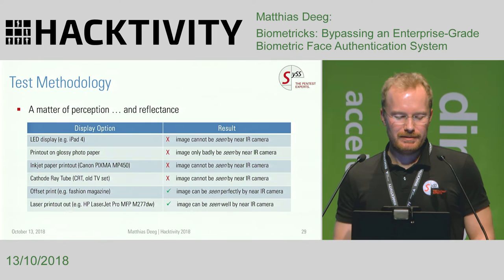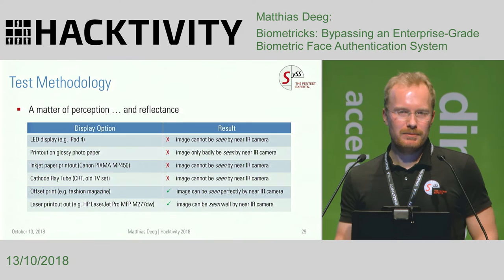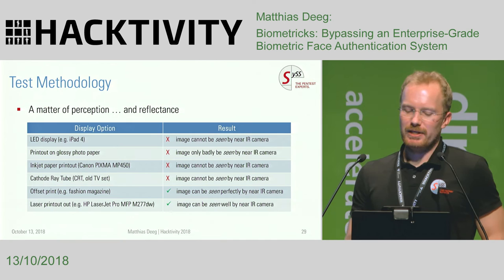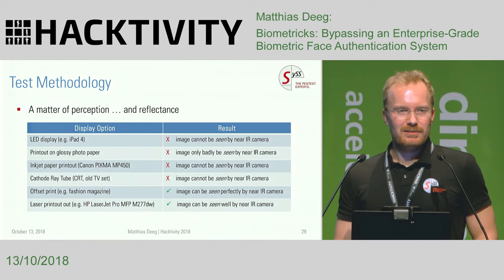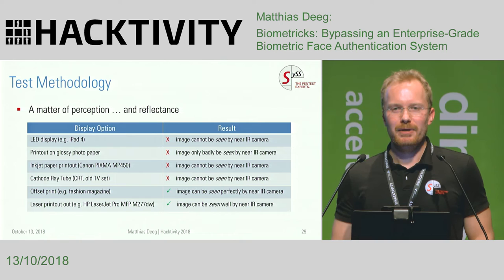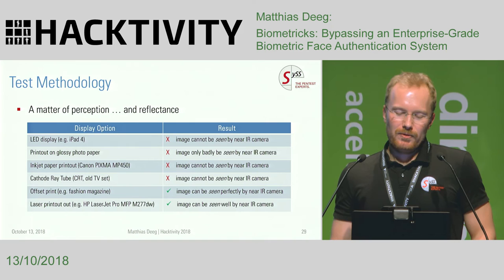I also carried an old TV set from my basement to test a cathode ray tube — the image also could not be seen by the near IR camera. Then I got hold of a fashion magazine — a Cosmopolitan — and realized that a high-quality offset print on glossy paper can be seen perfectly by the near IR sensor of our test setup. That was a good direction to go, but unfortunately I didn't have access to an offset printing machine.